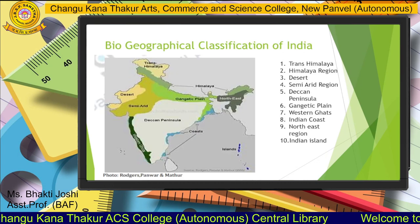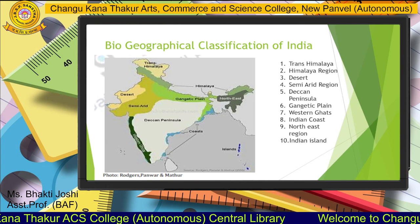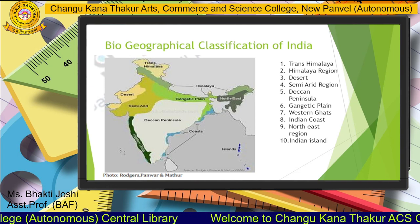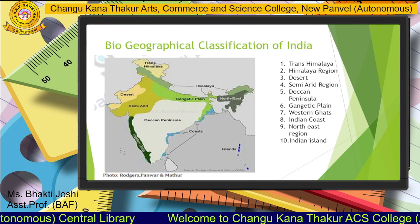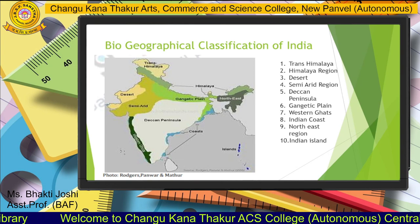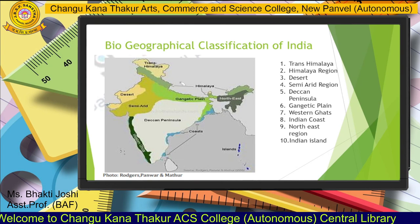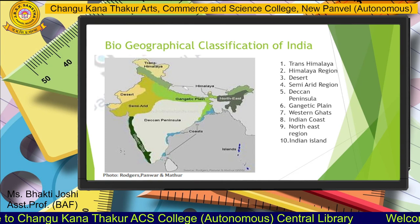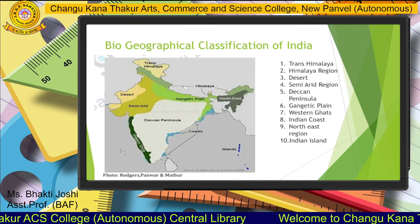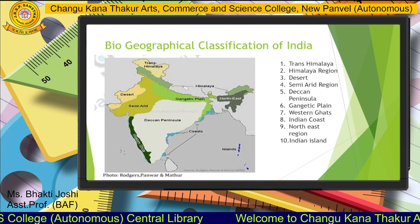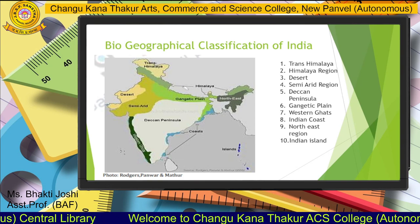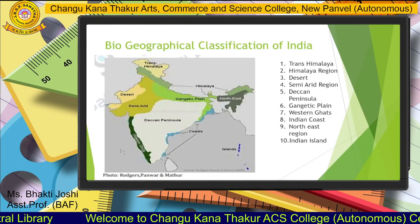Next we will see the biogeographical classification of India. This map of India shows the different types of biodiversity available across the country. The first region is Trans-Himalayan. The rest of this topic will be discussed in our next lecture. Thank you.